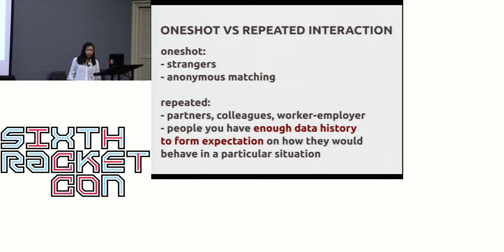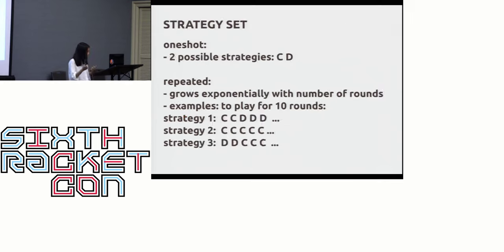We consider the game in two settings: the one-shot and the repeated interaction. In the one-shot settings, two players will meet for just one time, play the game for just one time, and then that's it. You can think about this as the match between strangers or anonymous matchings in which you play the game with another person in a different room and you don't see that person. The second setting is the repeated interaction in which a player will be matched for many rounds together. You can think about your partners, your colleagues, your boss, and people that you have enough data history to form expectation on how they will behave in a particular situation.